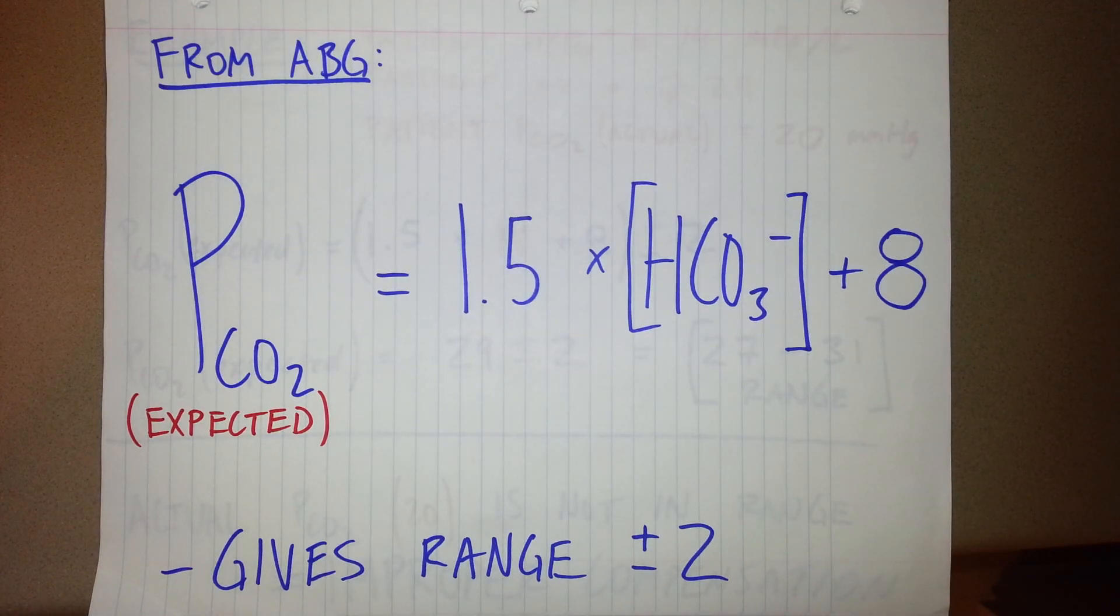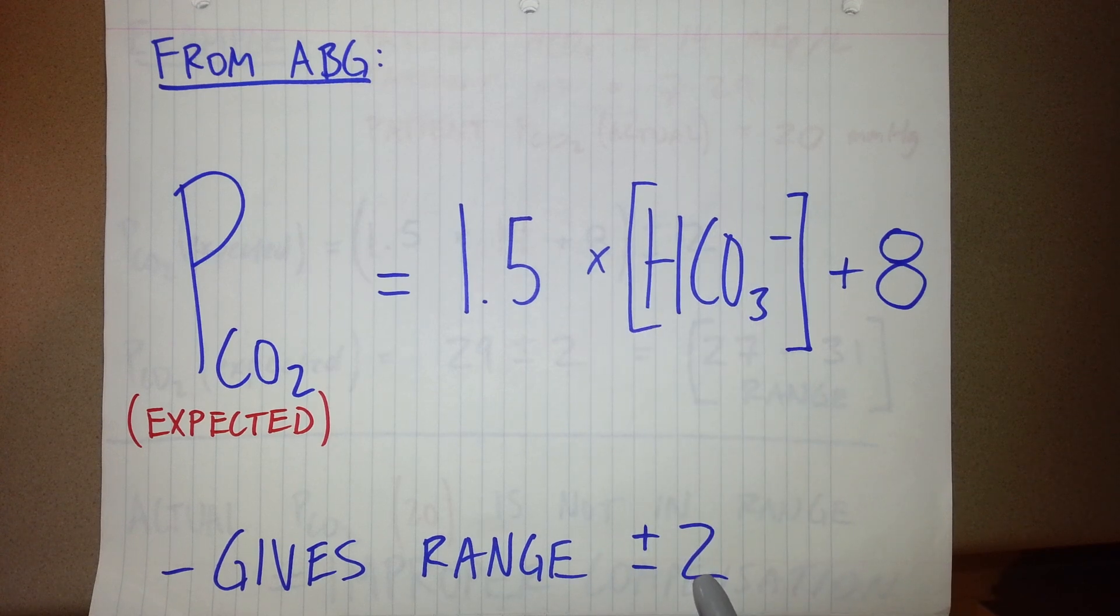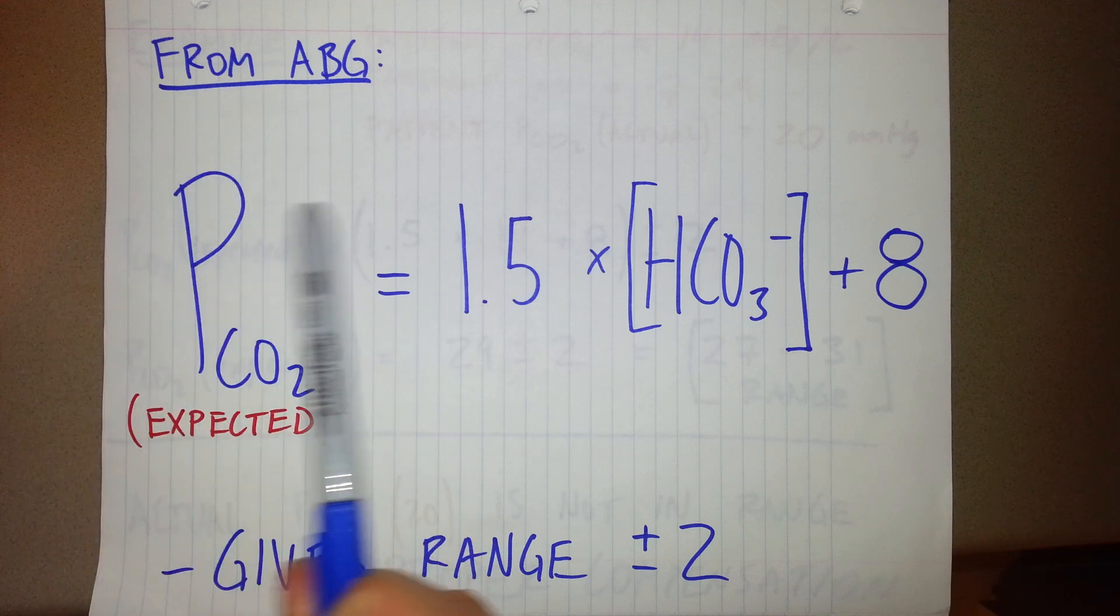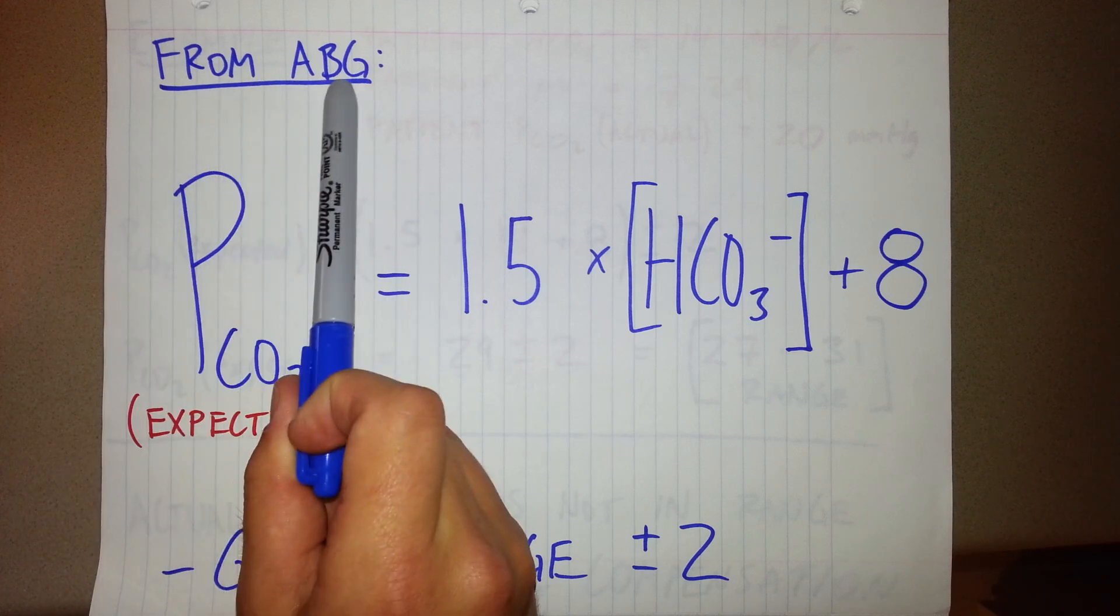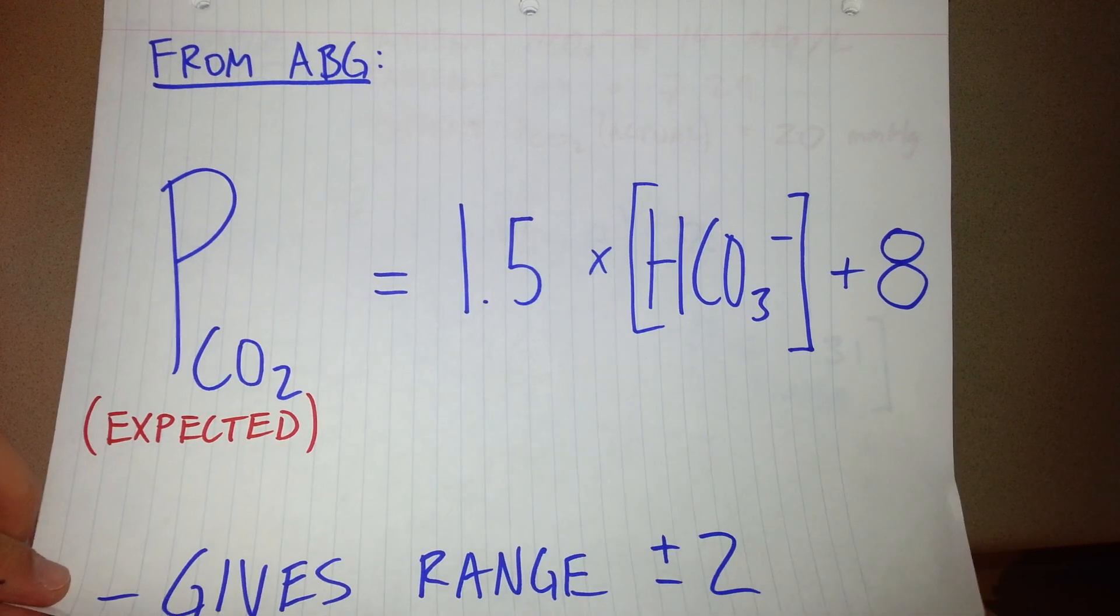Winter's formula is this: The expected partial pressure of carbon dioxide in the bloodstream should be within the range of 1.5 times the bicarbonate level plus 8. And this gives you a range plus or minus 2. So whatever number this formula spits out, you want to add or subtract 2 from that to give you a range. And it's also important, at least for this video's sake, that we will be using values given from arterial blood gas, not the venous blood gas, which would be a bit different.